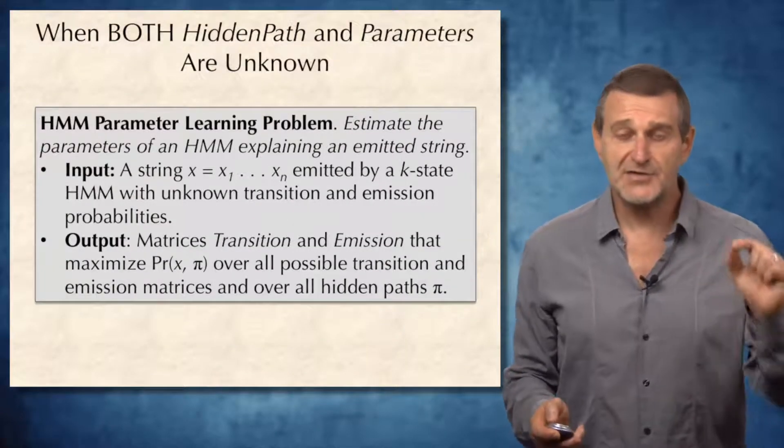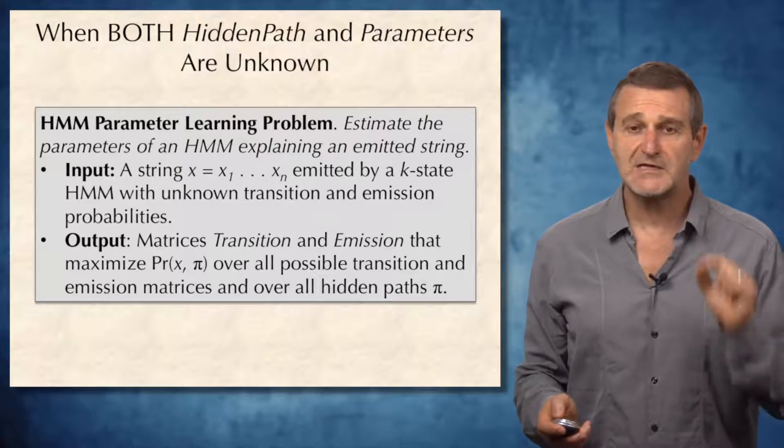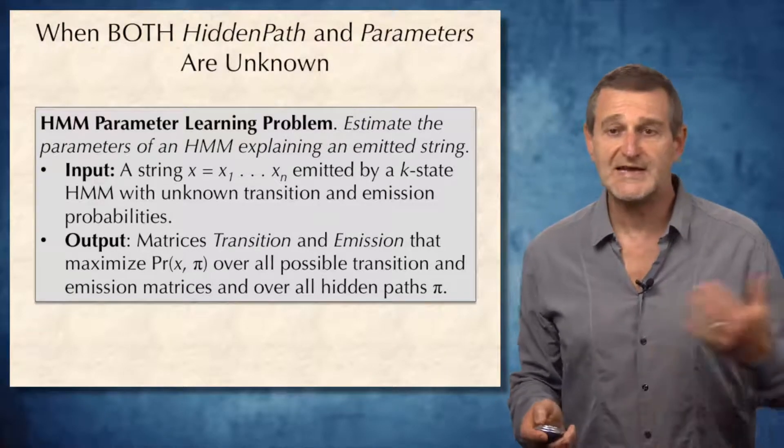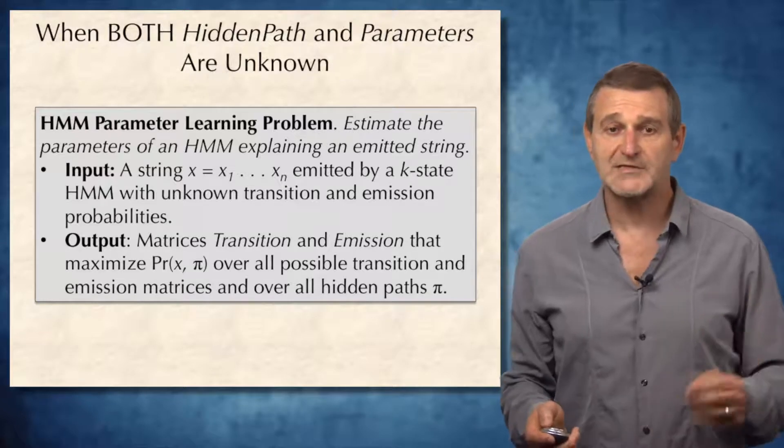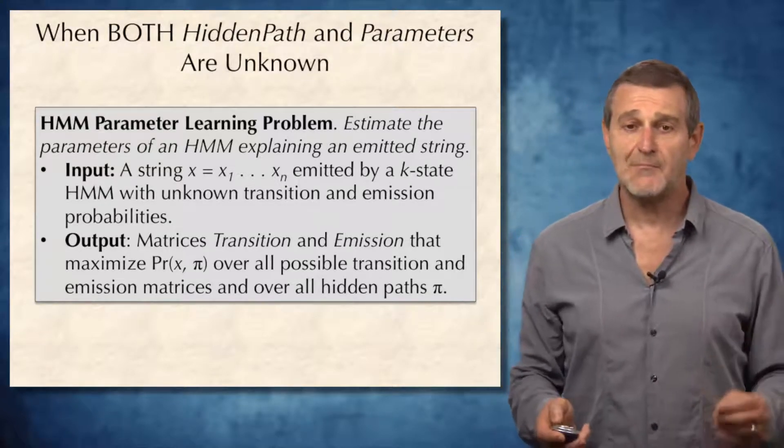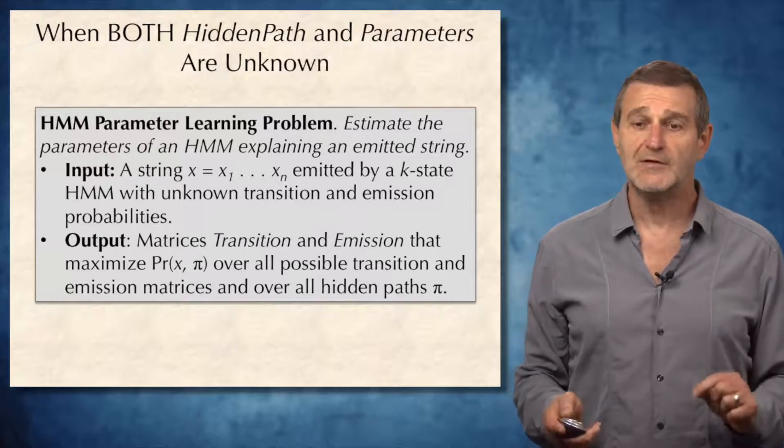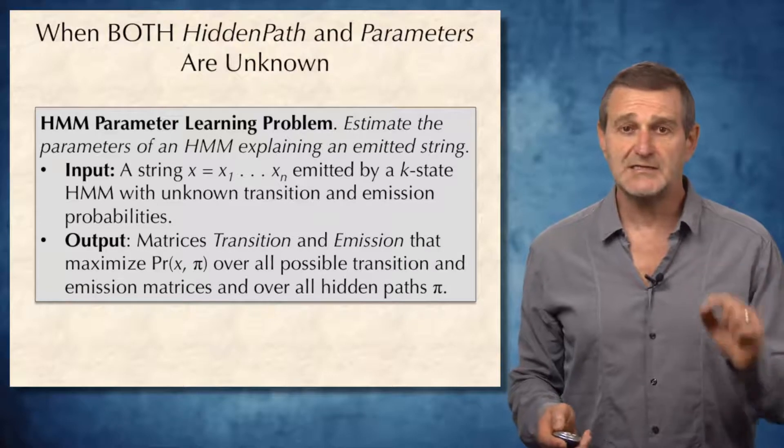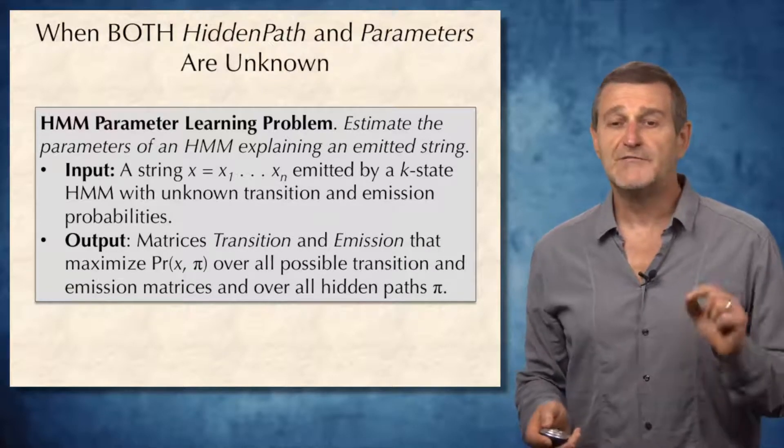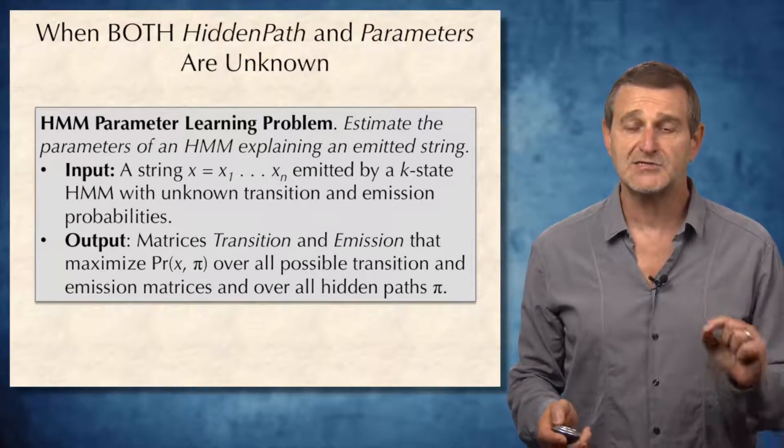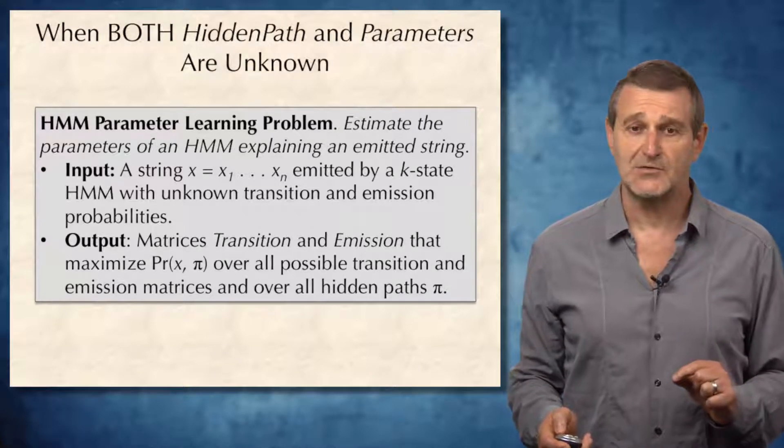However, the real problem we are trying to solve is the problem when the dealer is not that generous, so neither hidden paths nor parameters are known. And it results in HMM parameter learning problem, a more difficult problem than HMM parameter estimation problem. In the HMM parameter learning problem, we need to estimate the parameters of an HMM explaining an emitted string. Only the emitted string is known.